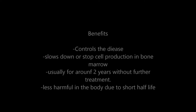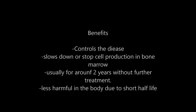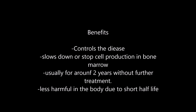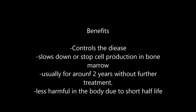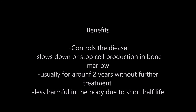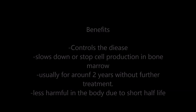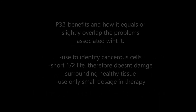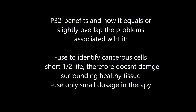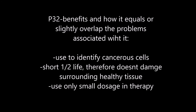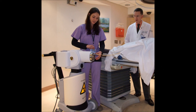P-32 controls the disease and slows down or stops cell production in the bone marrow, usually for around 2 years without further treatment. Although some problems arise, P-32 has many useful effects in medicine. It can not only control cancerous cells but also be used to identify them. It has a short half-life of 14 days and does not damage surrounding healthy tissues, as it only uses a small dose at a time in therapy. P-32 is used in brachytherapy, which reduces new cancers being formed during treatment.